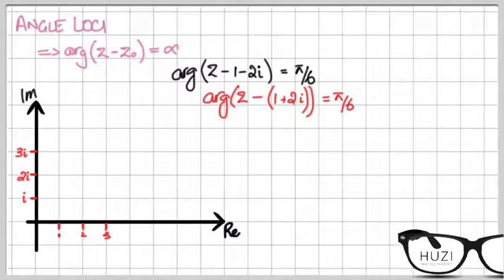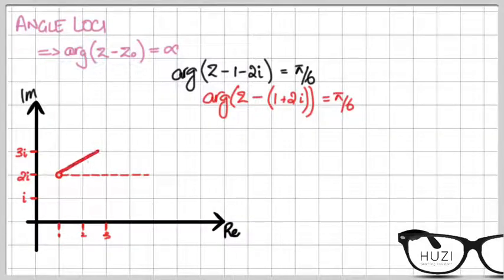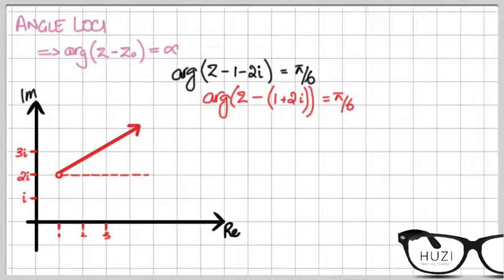First you place your fixed point — that's over here — then you draw a dotted reference line. From this line, you measure the angle π/6, that's roughly 30 degrees. The locus goes all the way to infinity, and this angle is π/6.